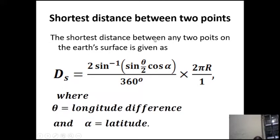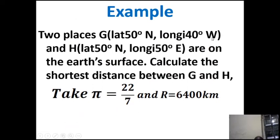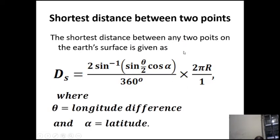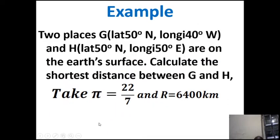The distance between two places along the great circle — leaving those points on the parallels of latitude and finding the distance along the great circle — is called the shortest distance between any two points on the Earth's surface. The formula is: D_s (shortest distance) = 2 × arcsin[sin(θ/2) × cos(α)] × (2πr / 360°), where theta is the longitude difference and alpha is the latitude of the places.